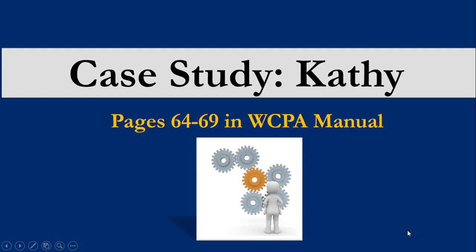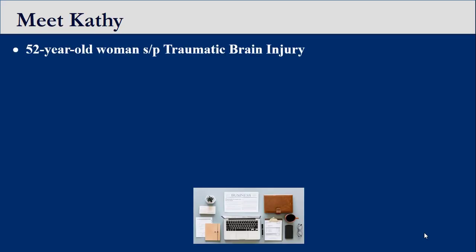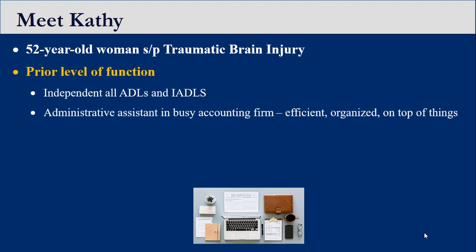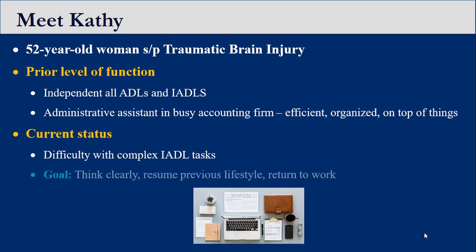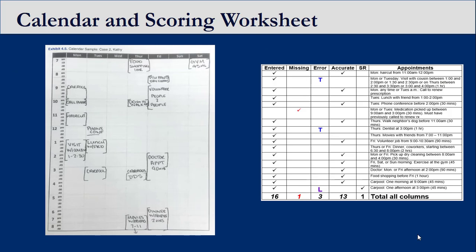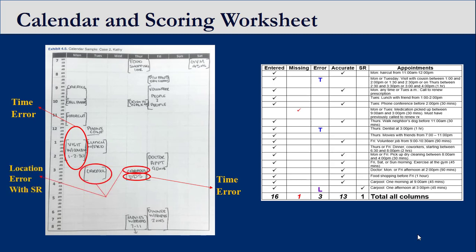The following case study will further illustrate documentation and interpretation of the WCPA. Kathy is a 52-year-old woman status post traumatic brain injury. Prior to her injury, Kathy was independent in all ADLs and IADLs and worked as an administrative assistant in a busy accounting firm. Kathy is currently having difficulty with cognitively demanding IADL tasks such as managing finances. Her goal is to think clearly so that she can resume her previous lifestyle and return to work. As illustrated in the calendar and scoring worksheet, Kathy allotted an incorrect amount of time for the visit with cousin and dentist appointments. Kathy also made a location error with a self-recognition when entering the carpool appointment.